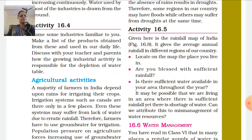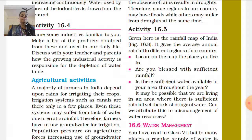It may be possible that you are living in an area where there is sufficient rainfall, yet there is a shortage of water. Can we attribute this to mismanagement of water resources? This way you will be able to understand how much rainfall there is, and whether any water shortage is due to mismanagement.